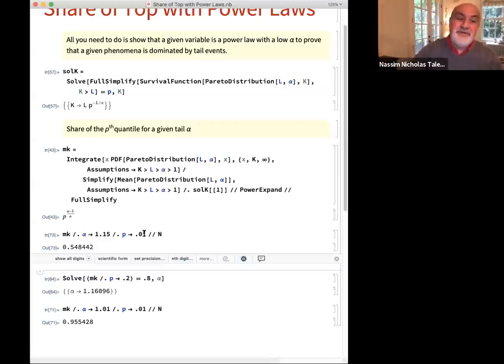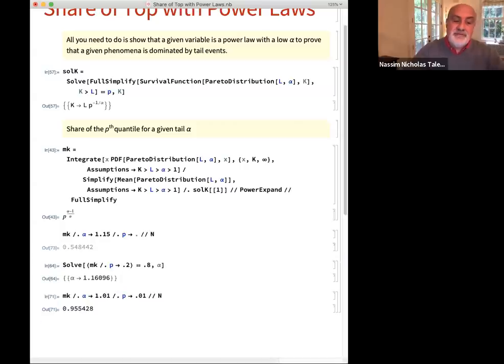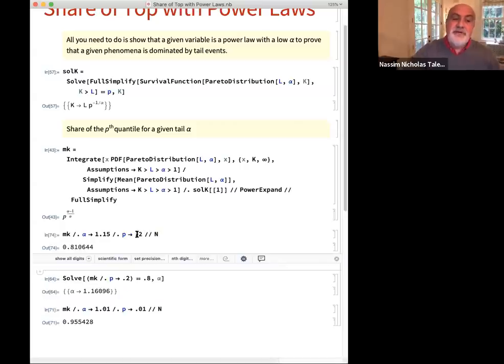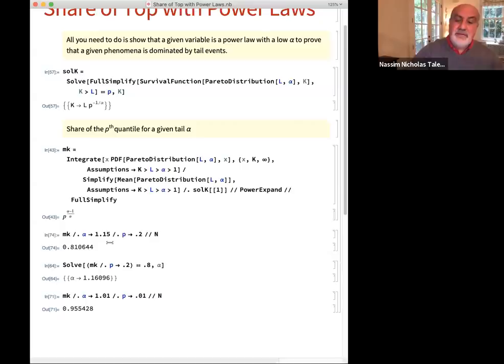So and actually this is the 80-20 because if I do P equal 0.2 it's close to the 80-20. Okay, I think the alpha 1.6 for the 80-20.